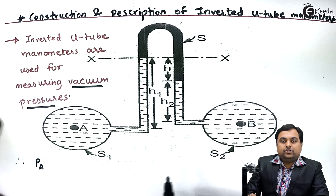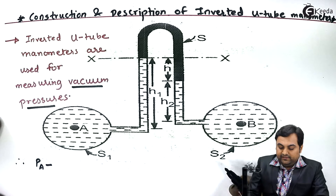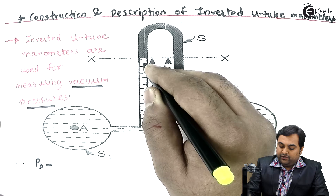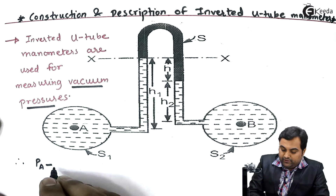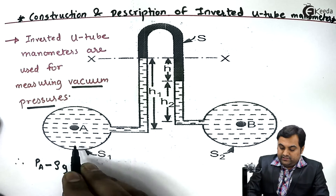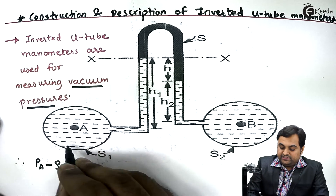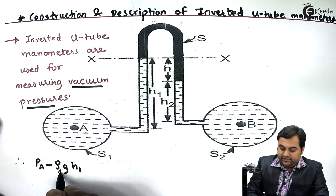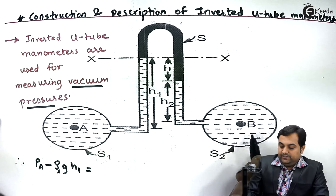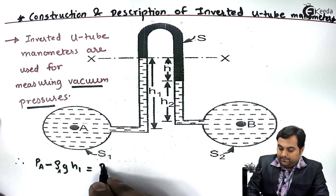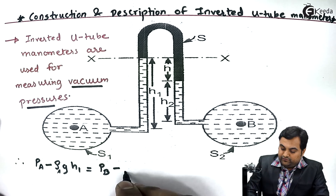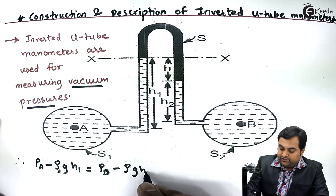Therefore, pressure in pipeline A — instead of adding, we subtract, that is minus, because of the left limb column h1: that will be rho_a × g × h1, where this density is of the fluid inside pipeline A. Next, for the right-hand side: pressure in pipeline B, minus h2 is the height of the fluid, so this is rho_b × g × h2.